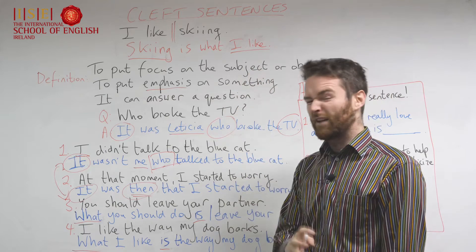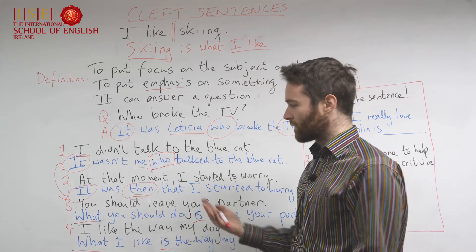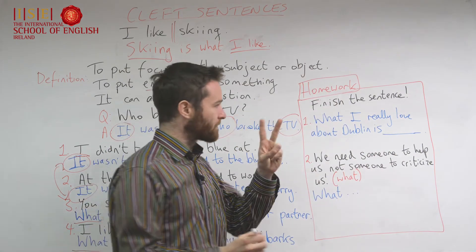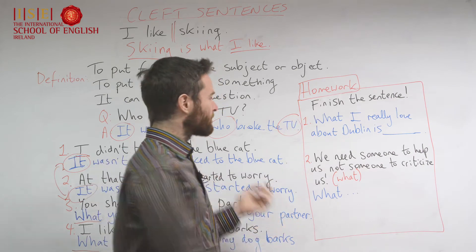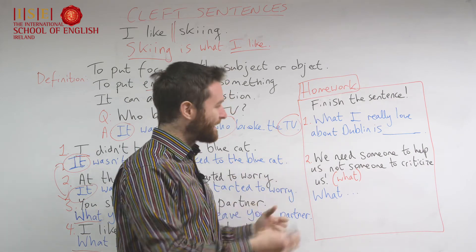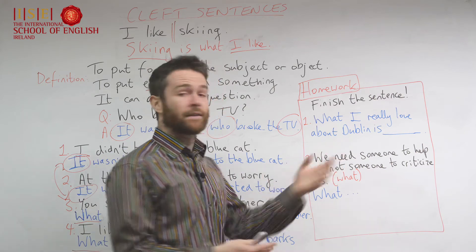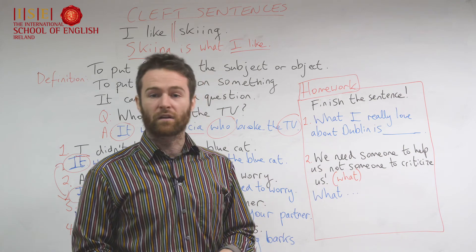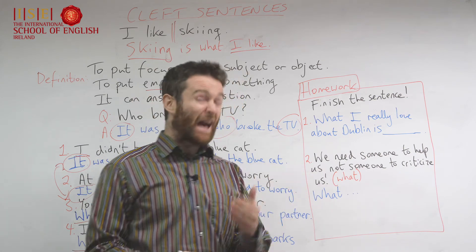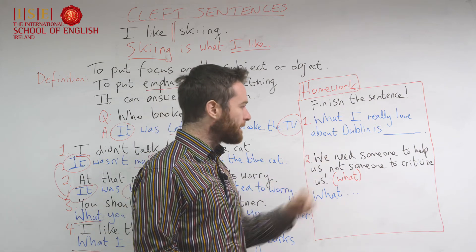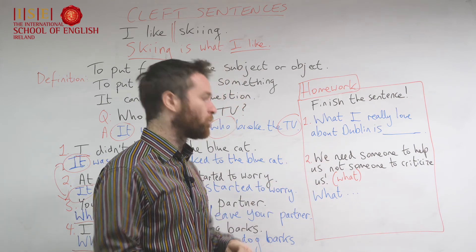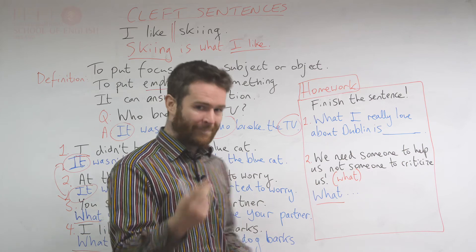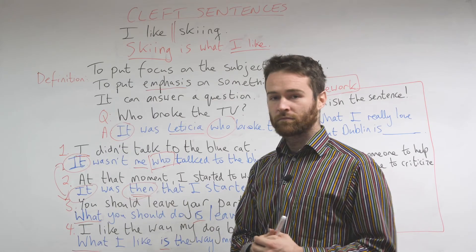So we have a little idea of what cleft sentences are and what we can do. Here's your homework — what you need to do is your homework! Two exercises: firstly, finish the sentence 'What I really love about Dublin is...' — you can say something like 'What I really love about Dublin is the beautiful park called Phoenix Park.' The second exercise is a transformation: 'We need someone to help us, not someone to criticize us' — rewrite that sentence using 'what,' referencing these examples.